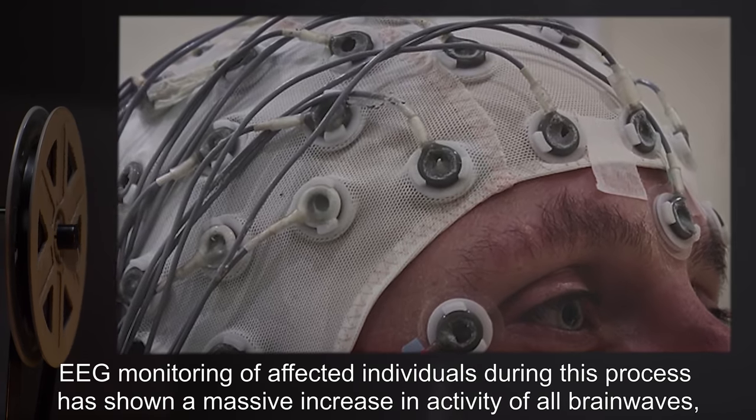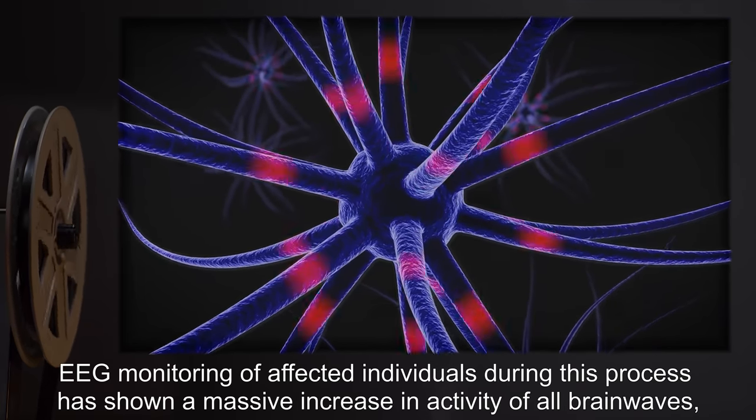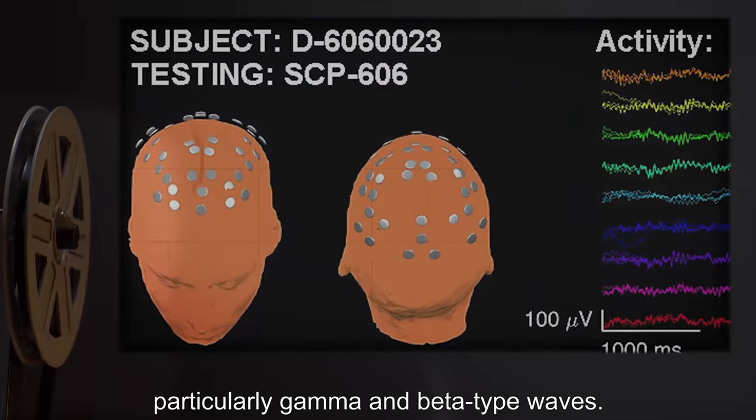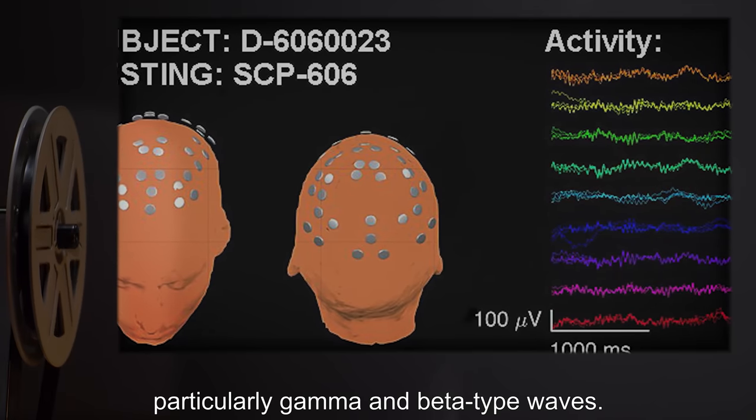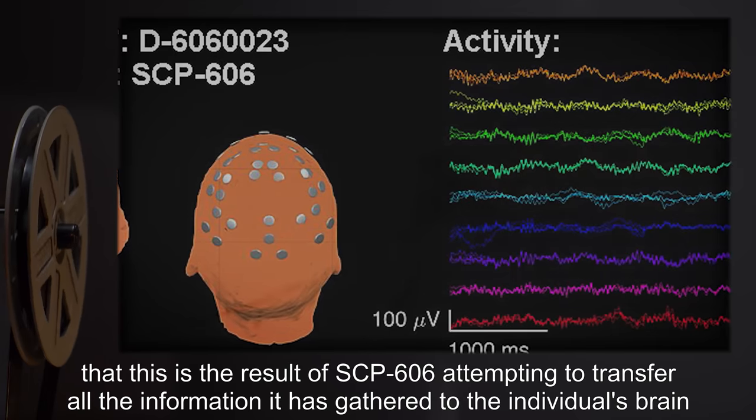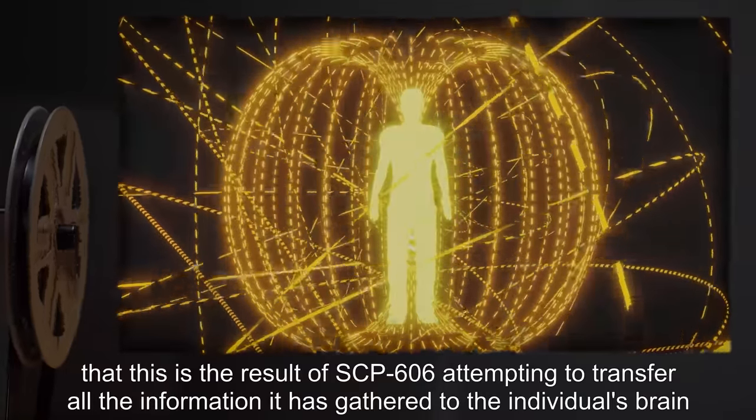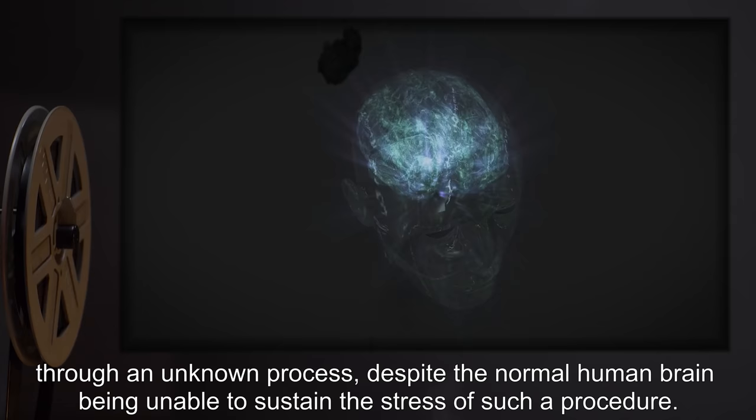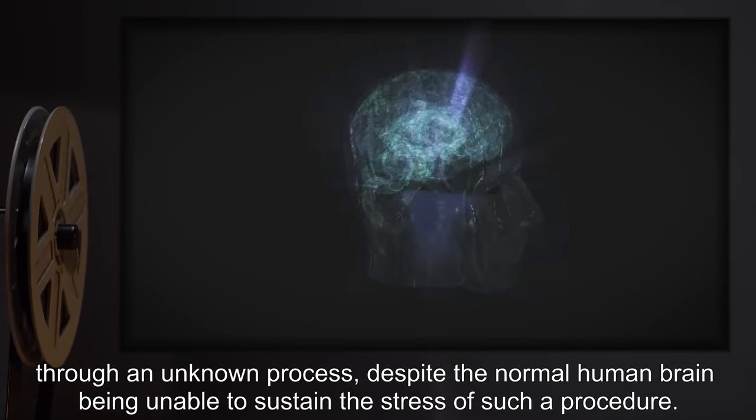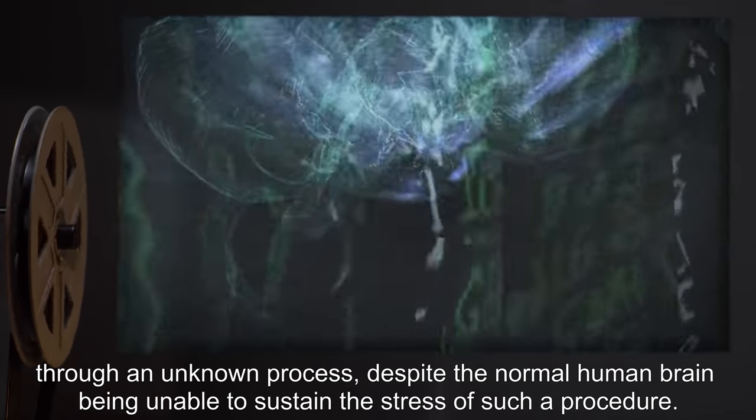EEG monitoring of affected individuals during this process has shown a massive increase in activity of all brain waves, particularly gamma and beta-type waves. It is presently theorized that this is the result of SCP-606 attempting to transfer all the information it has gathered to the individual's brain through an unknown process, despite the normal human brain being unable to sustain the stress of such a procedure.